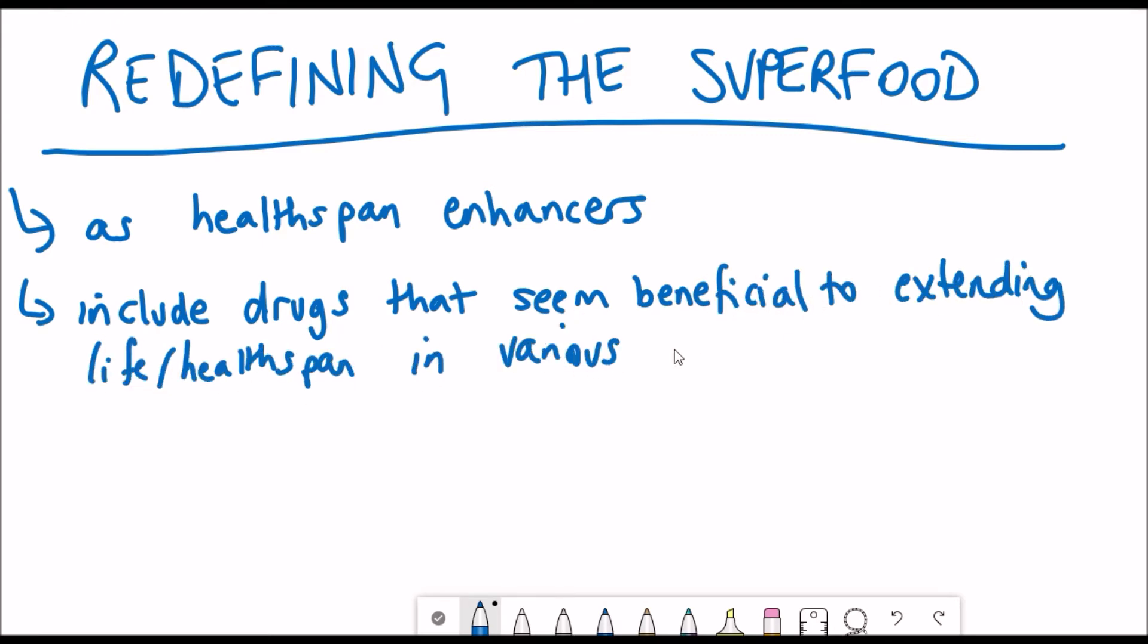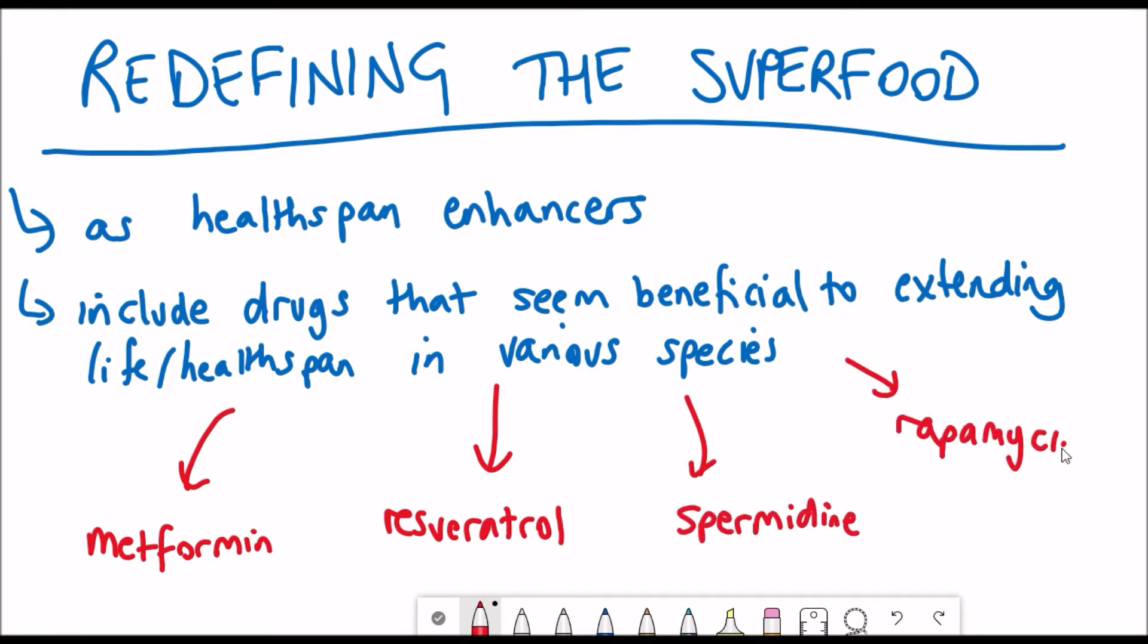Much hype is currently surrounding a variety of drugs that are beneficial to extending lifespan and/or health span in various species. These include drugs like metformin, which is currently registered for clinical trials against aging itself, resveratrol, spermidine and rapamycin.